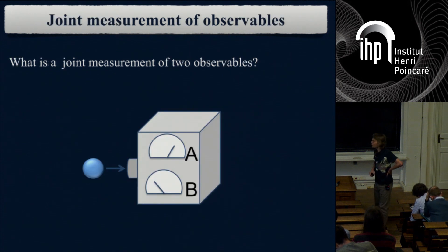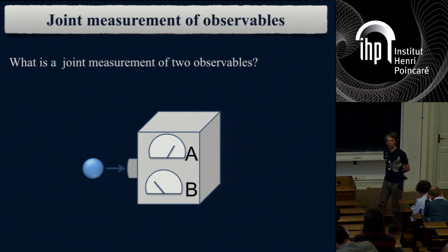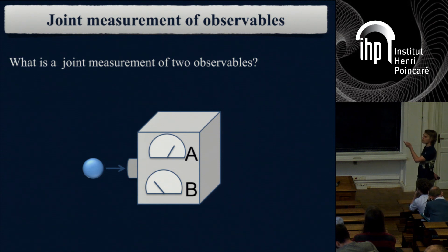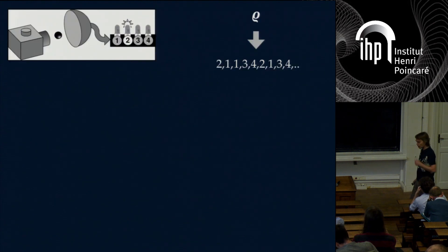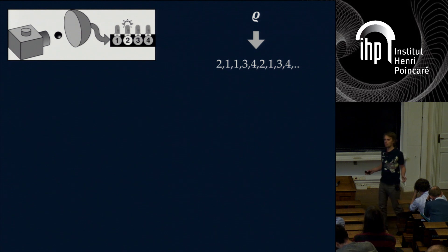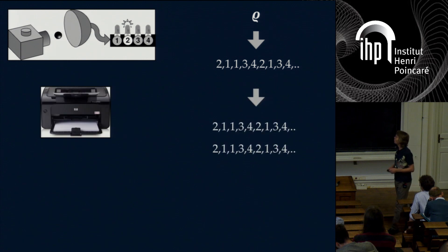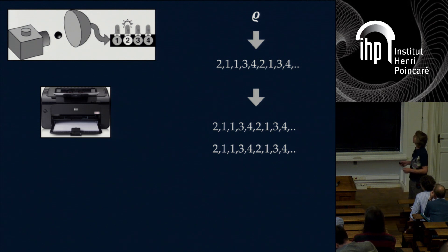Now let's clarify what it means when two observables are jointly measured. You don't have that kind of device directly. When we think about joint measurement, we think about some kind of simultaneous measurement, but somehow that's not really precise. How I like to think about joint measurement: you make an ordinary measurement—a POVM—and you get a series of outcomes. What you can then do is go to a Xerox machine and make as many copies of your list of measurement outcomes as you want.